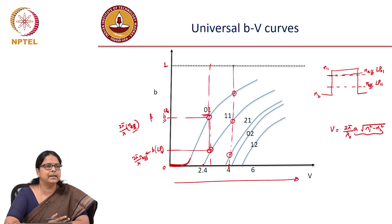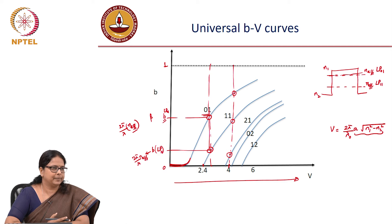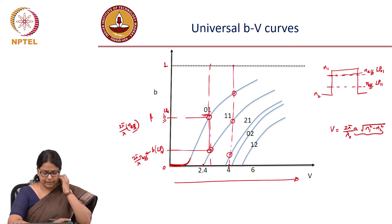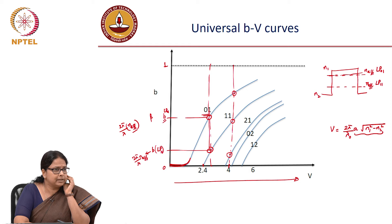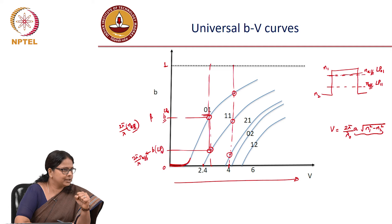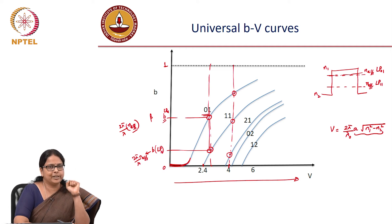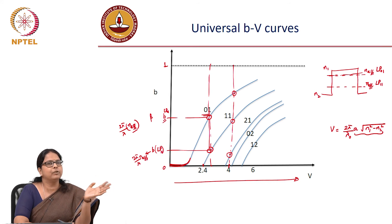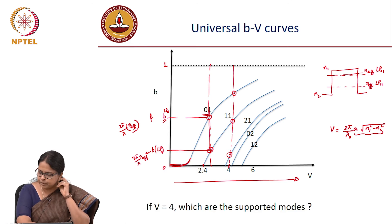Typically in a commercial communication-grade fiber, when we say single mode fiber, it actually means that the fiber is single-moded at 1550 nanometers. It is also single-moded at 1310 nanometers. For the two most commonly used wavelengths, it is single-moded for both. So the supported modes for V equal to 4 are those three modes.